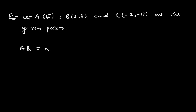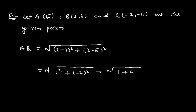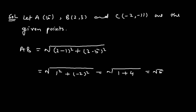Using the distance formula, we subtract x1 from x2: x2 is 2 and x1 is 1. We find the square of this whole value, plus (3 minus 5) squared. If we further solve it, this value equals 1 squared plus (-2) squared, which means the square root of 1 plus 4, which means AB equals the square root of 5.